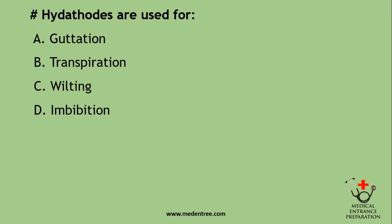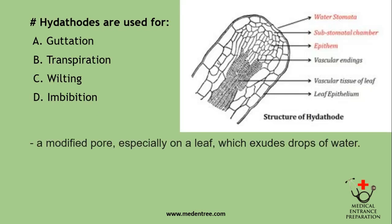Hydathodes are used for: guttation, transpiration, wilting, or imbibition? Hydathodes are special organs for guttation — a modified pore, especially on a leaf, which exudes drops of water. Both transpiration and guttation are means of losing water, but in transpiration, water is lost as vapor, whereas in guttation, droplets of water in liquid form are lost.